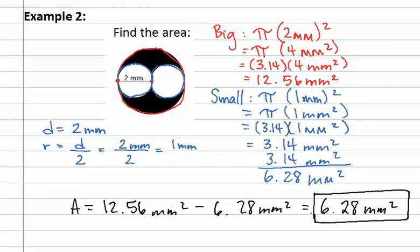Remembering: shapes that have pieces cut out of them require subtraction. If there are no pieces cut out, then all of the shapes are added together.